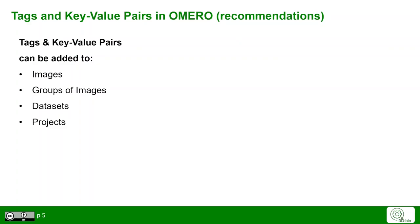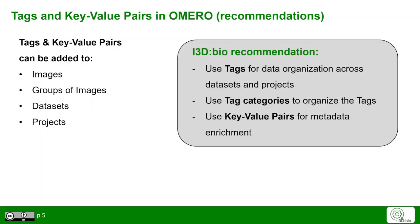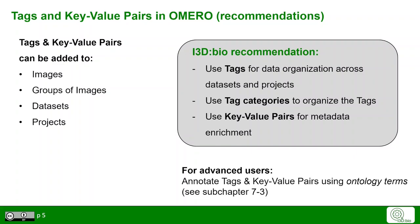Tags and key-value pairs can be annotated at all levels of images, datasets, or projects. We recommend that tags are used for data organization, tags could be categorized, and that key-value pairs should be used for metadata enrichment. Advanced users should look at ontology terms for annotation, which we will focus on in a later chapter.